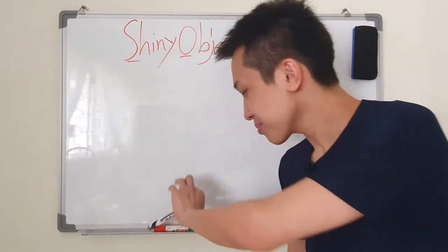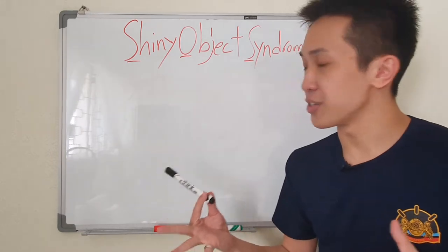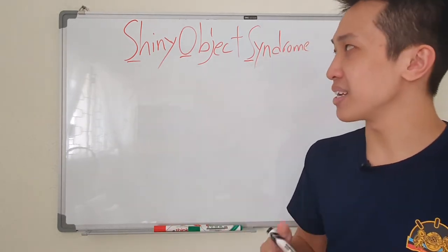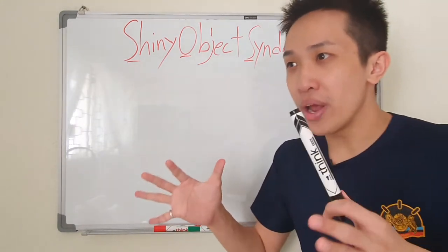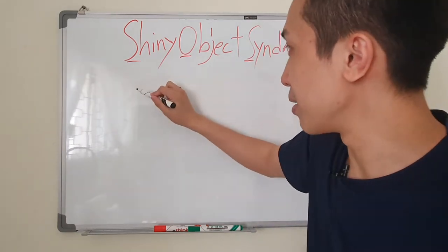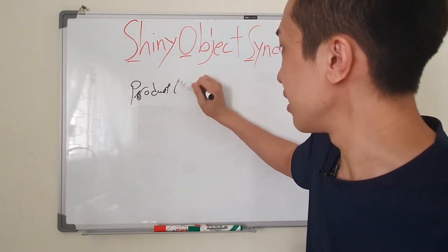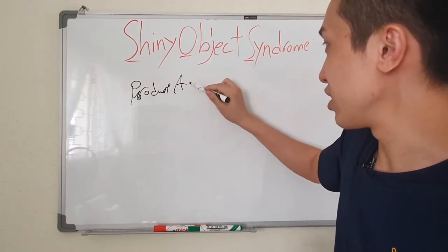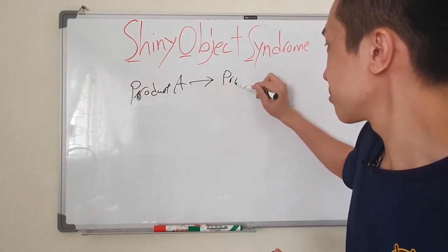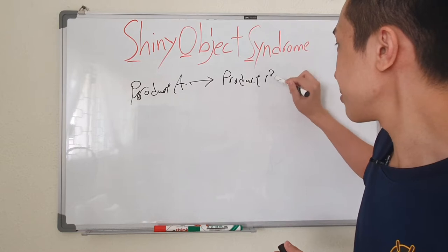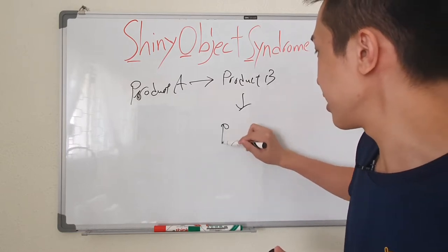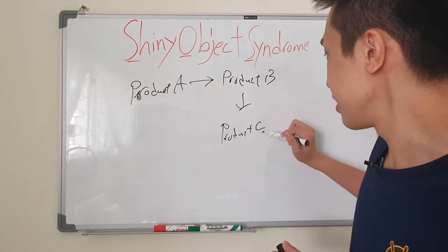Okay, so first we have to really understand what is shiny object syndrome. Basically, you are just going from product A, then you jump to product B, then you jump to product C, and the list goes on.